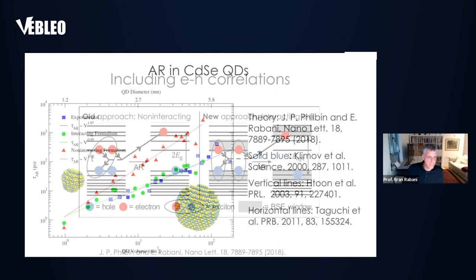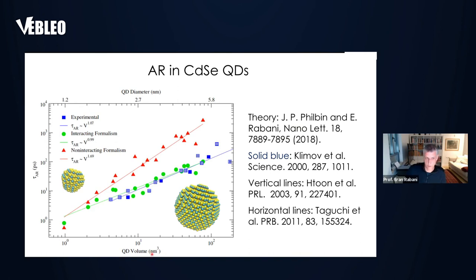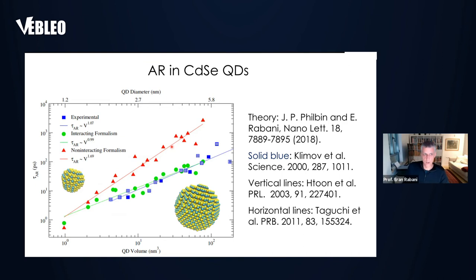Here are the results. On a log-log plot, we show the Auger lifetime as a function of the volume of a quantum dot for realistic cadmium selenide quantum dots, up to about 5.5 nm in diameter — experimentally relevant regimes. These are calculations of quantum dots with a few thousand atoms and roughly 10,000 electrons. The red symbols are the non-interacting results — the old theory — that do not reproduce the experimental universal volume scaling, giving a scaling with volume to the power of 1.7.